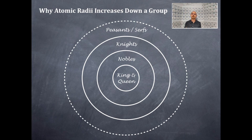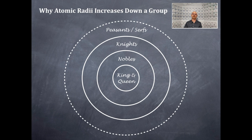The nobles, which are very close — that's n of one, where the electrons are — they are very close to the king and the queen. Whereas the knights must get farther away from the king and the queen because of the electron repulsive forces by the nobles. The nobles really don't want the king and the queen to interact with the knights very much at all. But certainly the peasants and the serfs are in the most dire situation because they are the furthest away — they have to go through the knights, through the nobles to get to the king and the queen, which of course we know never happens.